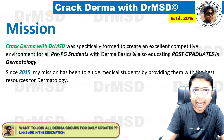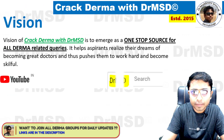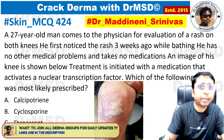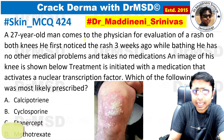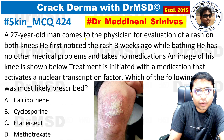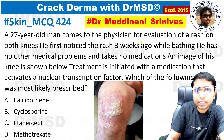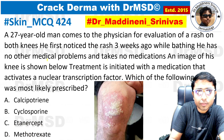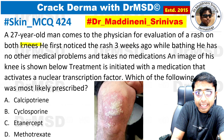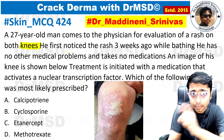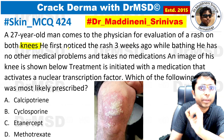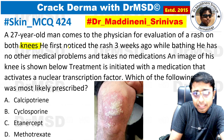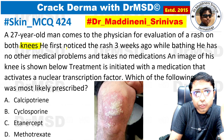Hello friends, welcome back. Today's video is very important because it is from the topic papulosquamous disorder. A 27-year-old man comes to the physician for evaluation of a rash on both knees. The rash is present only over the knees — this is one important point to focus on, because this is not a systemic involvement; it is only localized to the knees.